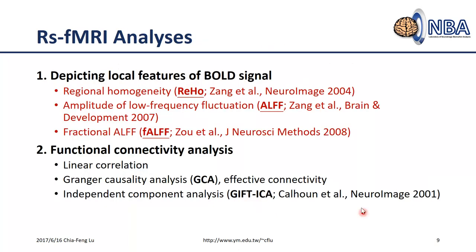For resting state fMRI analysis, we can categorize all approaches into two types. The first is to depict local features of BOLD signals — this is what we introduce today. The second is to find the correlation between brain regions, which is functional connectivity analysis. We will cover that topic in the next few weeks. Today we focus on identifying local brain activity using resting state fMRI data.